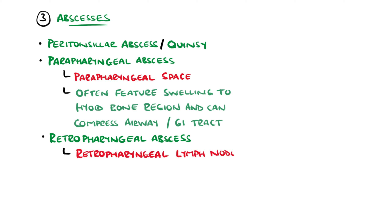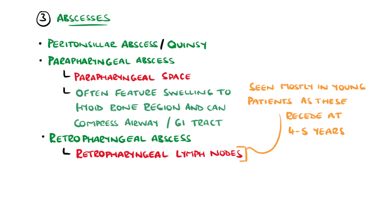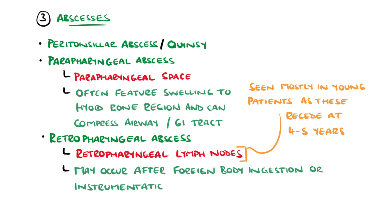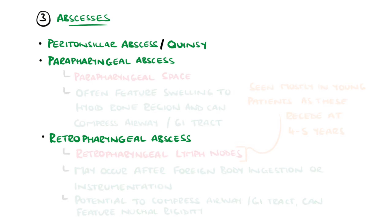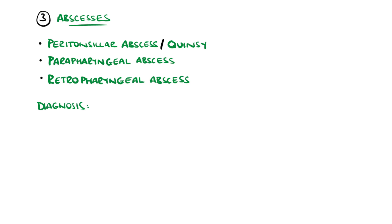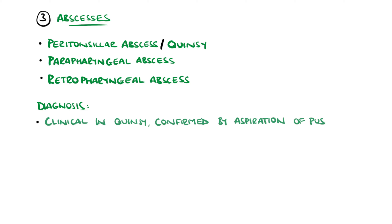A retropharyngeal abscess develops in the retropharyngeal lymph nodes, which is why these are seen mostly in children from ages one to eight as these nodes begin to recede by around four or five years. They can occur in adults who have ingested foreign bodies or had exposure to instrumentation. These can compress the airway and GI tract, giving symptoms like stridor and dysphagia, and can also cause neck stiffness alongside the sore throat.